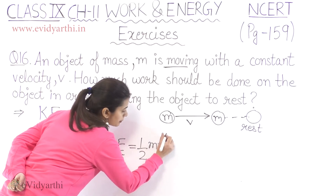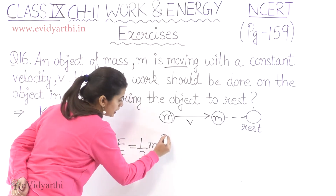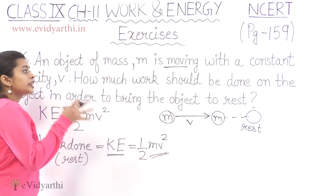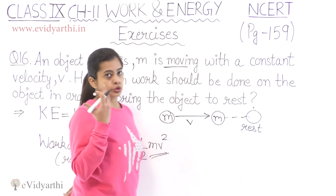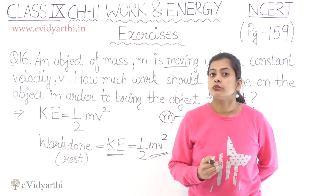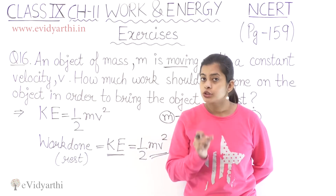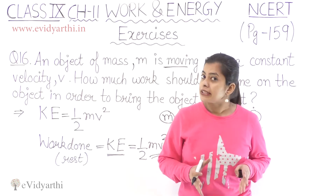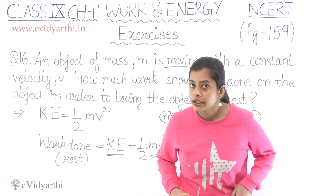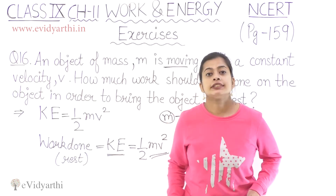The kinetic energy is equal to one-half Mv squared. Because we don't have any specific numerical values given, we are simply asked conceptually: if there is a moving object and we have to stop it, then we need to do work equal to its kinetic energy. When we stop the object, the work done equals the kinetic energy.